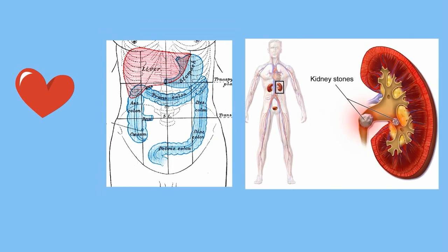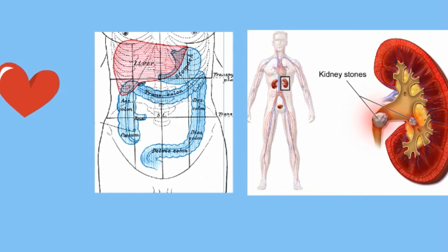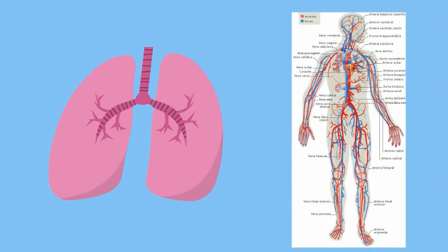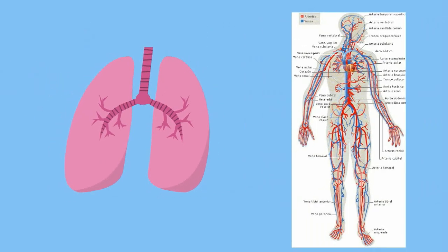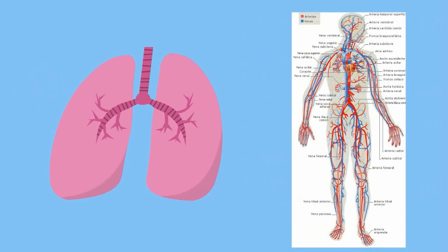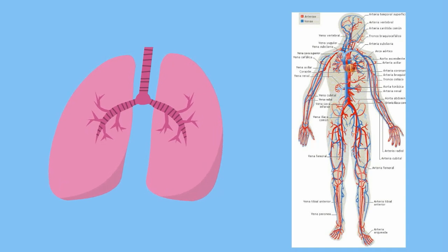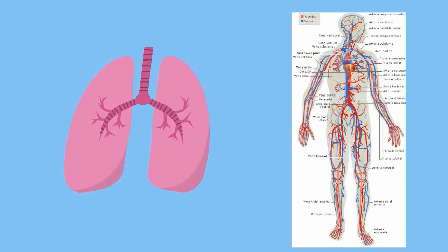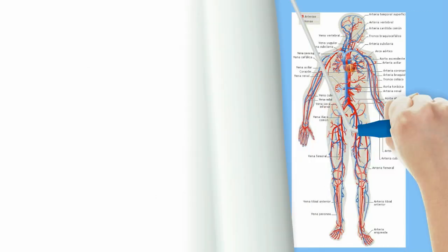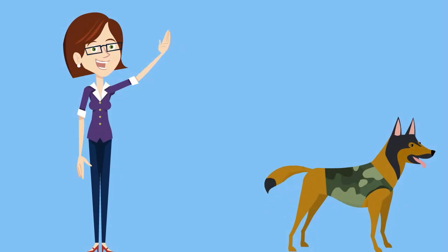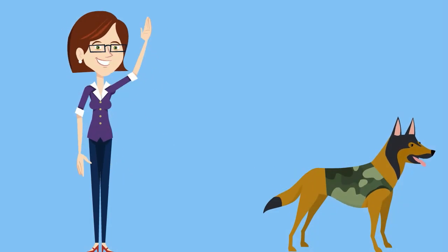The organs work together to create organ systems. Some common examples include the respiratory system or the cardiac system. The organ systems then work together to create an organism.